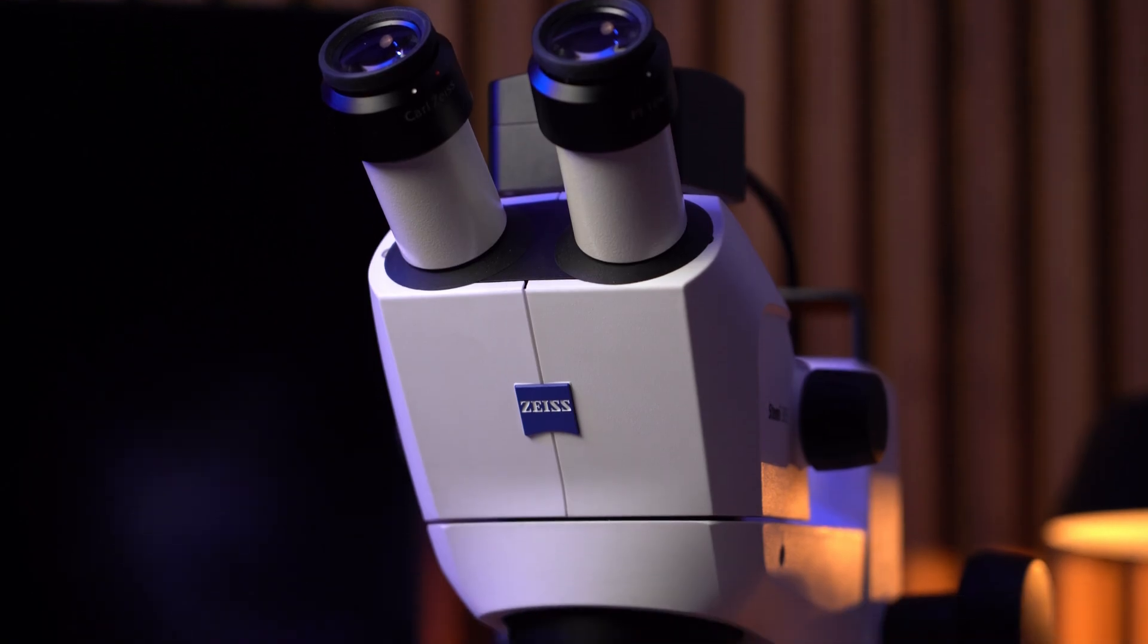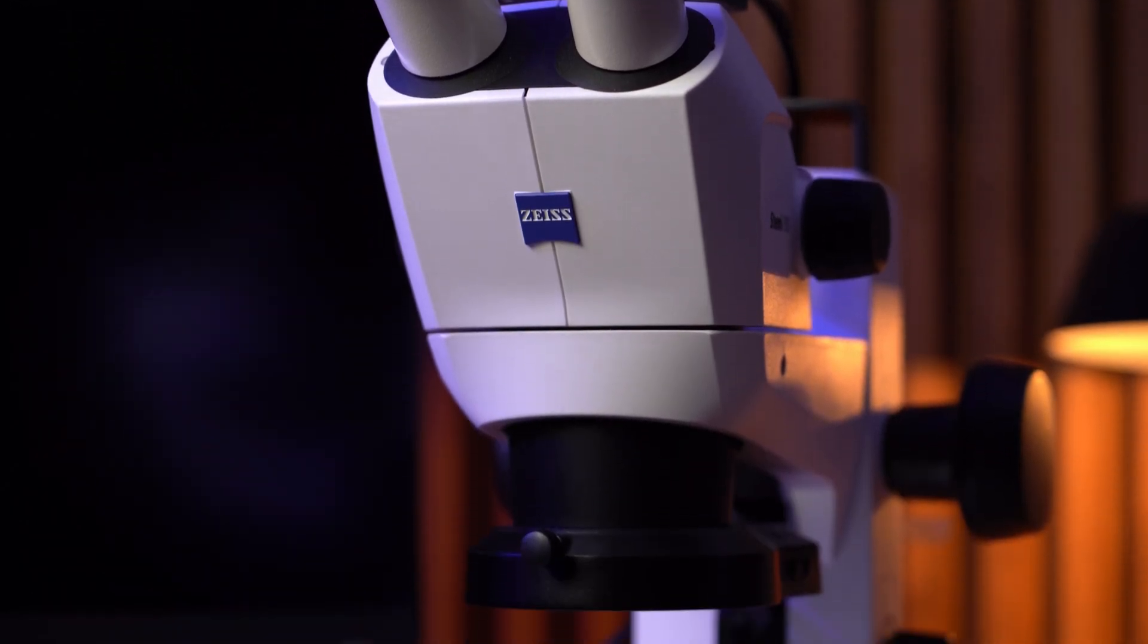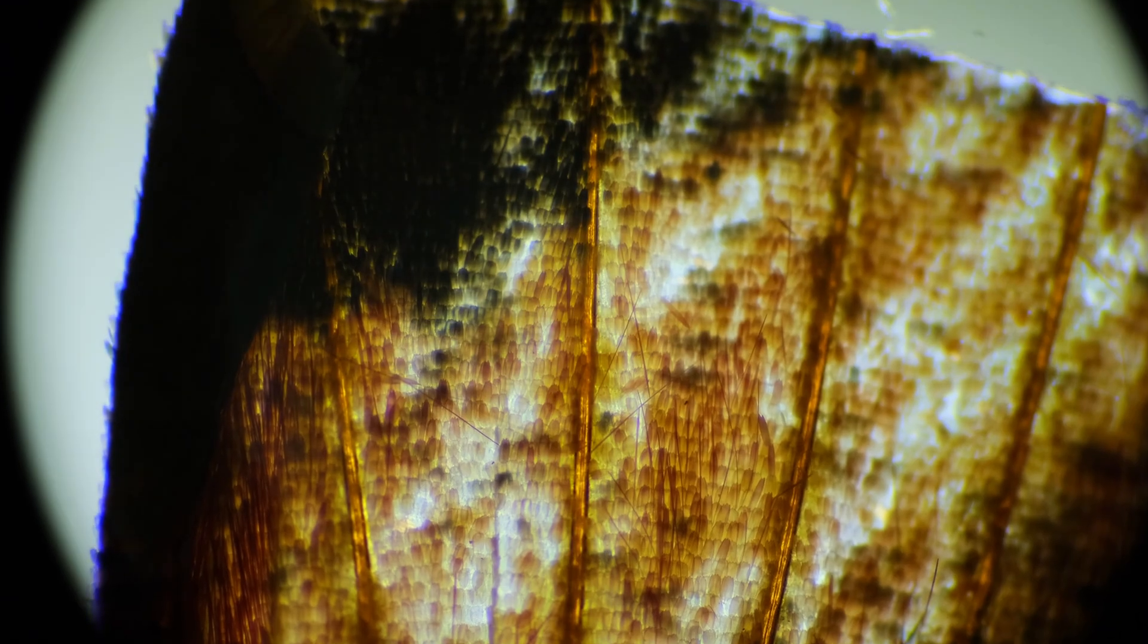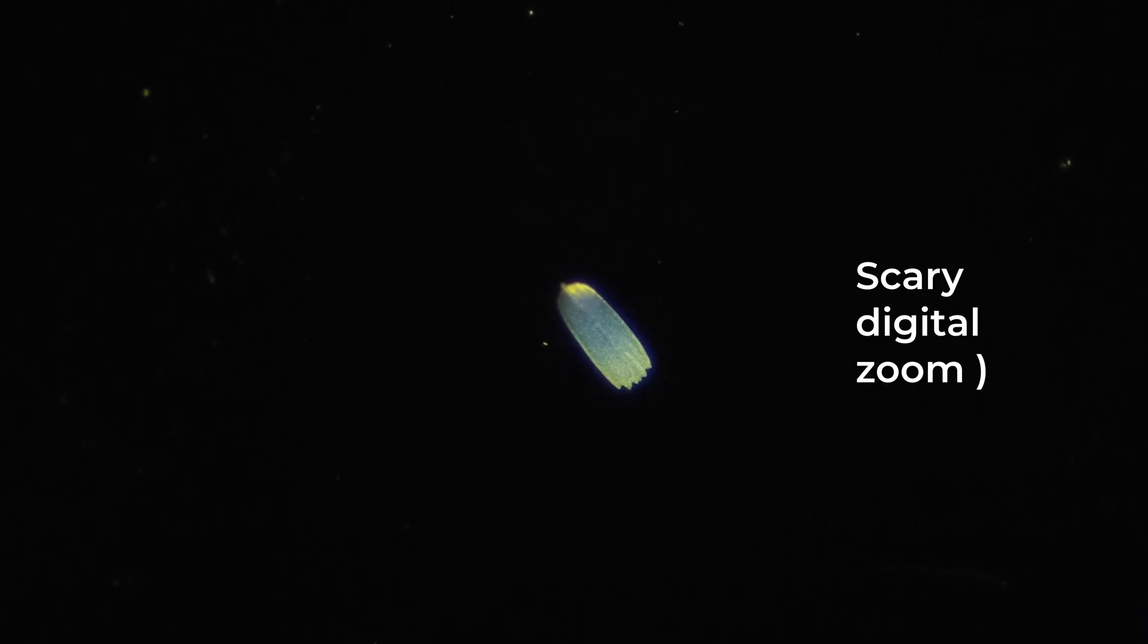So what can we tell about the butterfly wing using this microscope? We can see it's made up of little scales and hairs with different colors. We can't make out much detail yet, but we can clearly see their shape. To go deeper we need a more powerful microscope.